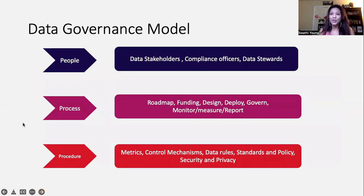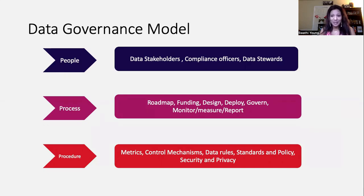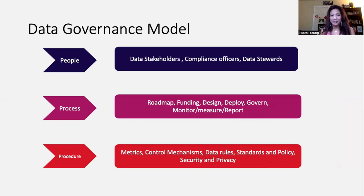So what can you think of when you think of a data governance model? We come back to people, process, and procedure — the three Ps. People: you have data stakeholders, compliance officers, data stewards, and this could be a combination of your business unit people, team members, as well as your technology team members.